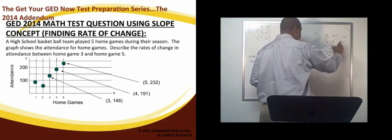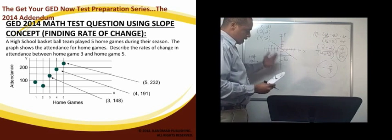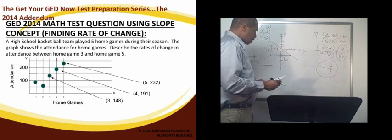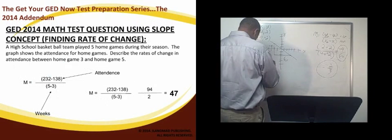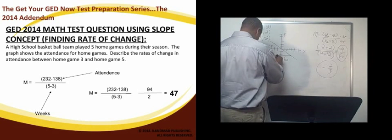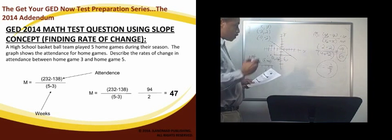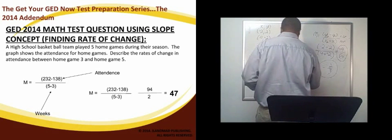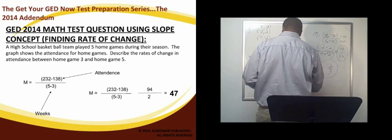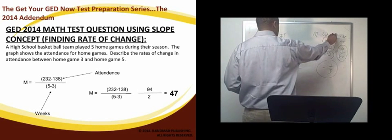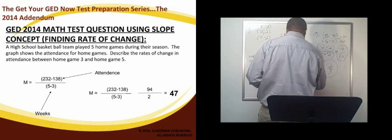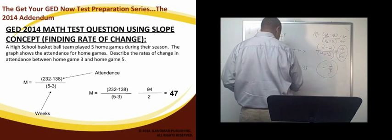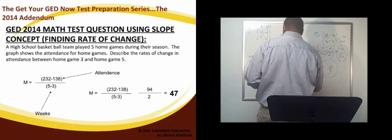And so you have those numbers there for the points. What we're doing is we're taking the concept of the slope, and now that concept is being tested in something called the rate of change. So what we're going to do is we're going to take these points, so this is home game 3 and home game 5, and so that's 3 because it's the third home game, and it's 148 in attendance, and then it's going to be 5 for the 5th home game, and that's 232 in attendance. So still using that concept of rise over run, what we're going to do is 232, that point, because we're talking, remember, y2 and y1 and x2 and x1, so we're going to take 232 minus 138. Sorry, I said 48 earlier, that's actually 38. And then we're going to subtract x2 minus x1, or 5 minus 3.